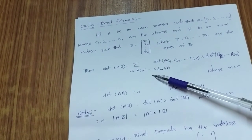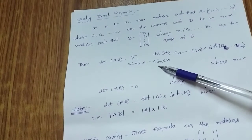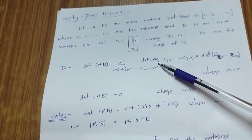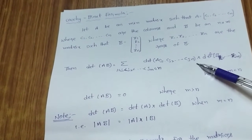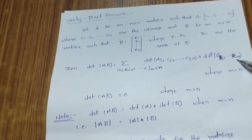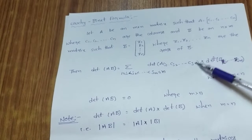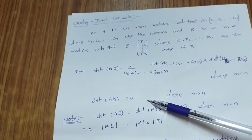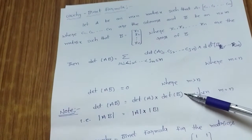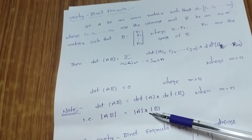Then the determinant of AB equals the summation over 1 ≤ J1 < J2 < ... < Jm ≤ N of: det of A with columns C(J1), C(J2), ..., C(Jm) times det of B with rows R(J1), R(J2), ..., R(Jm), where M < N. If M > N, then det(AB) = 0. When M = N, this simplifies to det(AB) = det(A) × det(B).